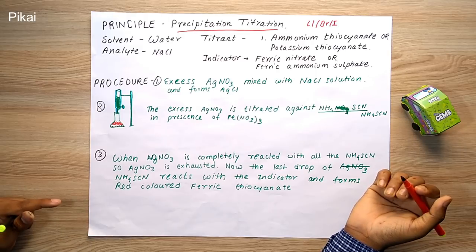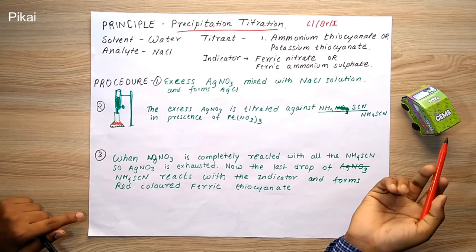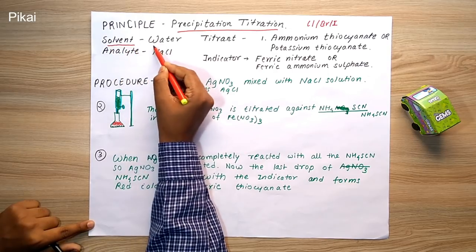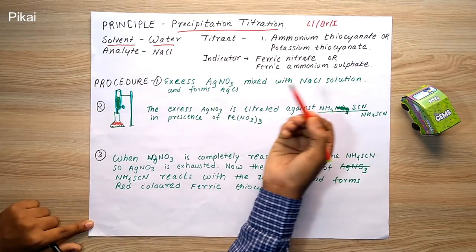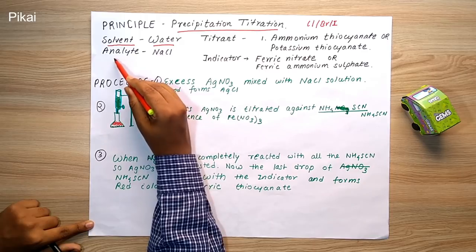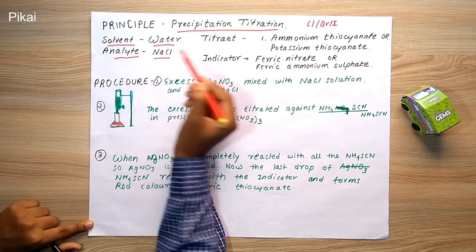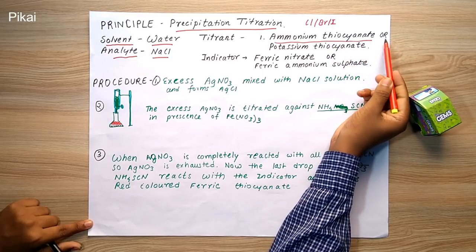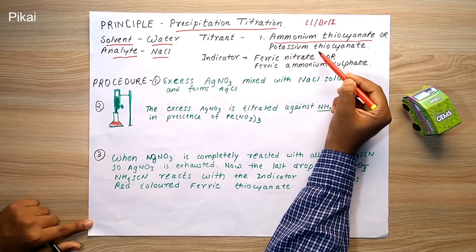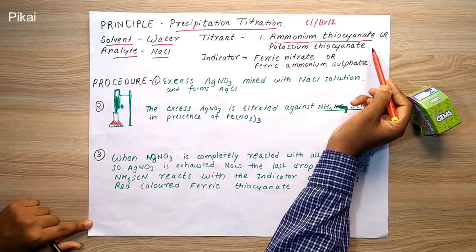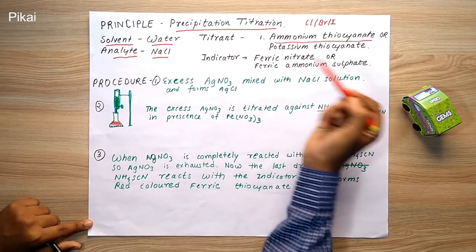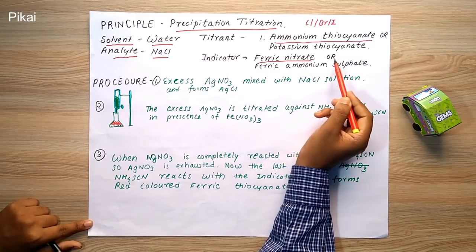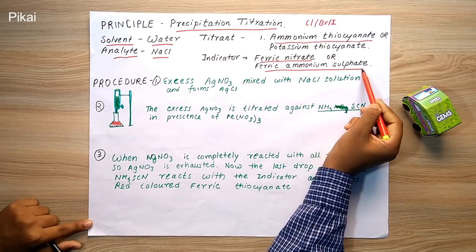Our solvent is water, as this is an aqueous titration. Our analyte is NaCl — we are using chlorine as the example. The titrant is ammonium thiocyanate (NH4SCN), or we can also use potassium thiocyanate. For the indicator, we use ferric nitrate, or ferric ammonium sulfate.